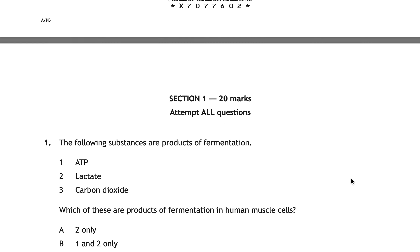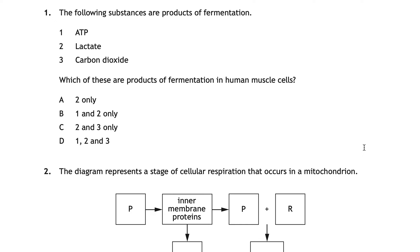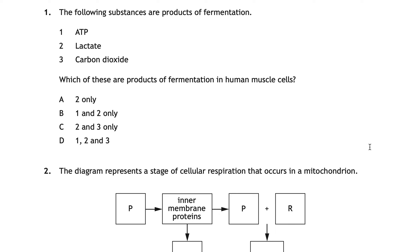Let's get started with question one where we look at the products of fermentation. Question one says the following substances are products of fermentation: one is ATP, two is lactate, and three is carbon dioxide. The question asks which of these are products of fermentation in human muscle cells. Pause the question and give it a go.